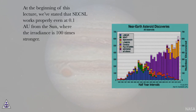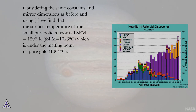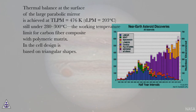At 0.1 astronomical units from the sun, where irradiance is 100 times stronger, using the same constants and mirror dimensions, the surface temperature of the small parabolic mirror is TSBM = 1296 K (1023°C), which is under the melting point of pure gold at 1064°C. Thermal balance at the surface of the large parabolic mirror is achieved at TLPM = 476 K (203°C), still under 280–300°C, the working temperature limit for carbon fiber composite with polymeric matrix. The overall cell design is based on triangular shapes.